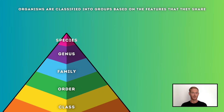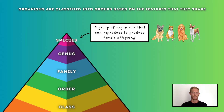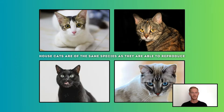At the smallest and most specific level, organisms are grouped into species. A species is a group of organisms that can reproduce to produce fertile offspring, and members of a species are almost identical in their anatomy, physiology, and behavior. For example, although house cats look very different to one another due to selective breeding, they're still of the same species as they're able to breed successfully.